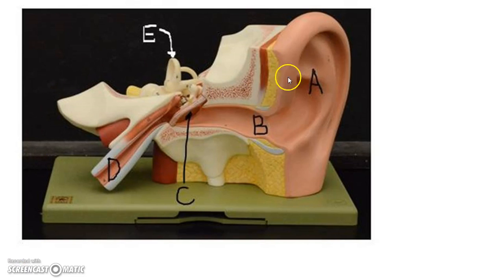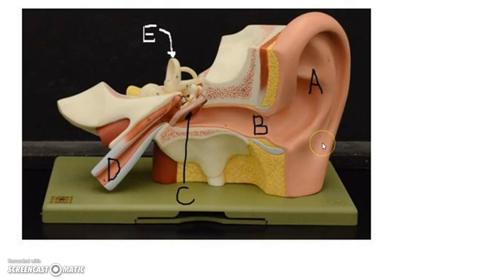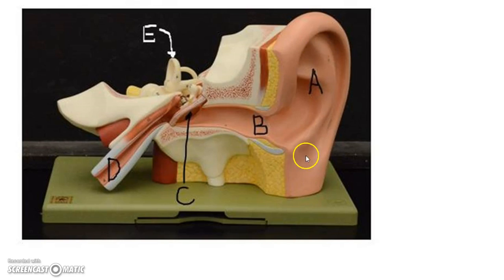We're going to start with the ear. Here you can see the whole model, and we're going to start with the auricle or the pinna. Its job is to direct sound waves towards the middle ear. Remember, we have the outer ear, the middle ear, and the inner ear — so the auricle or pinna directs the sound waves towards the middle ear.